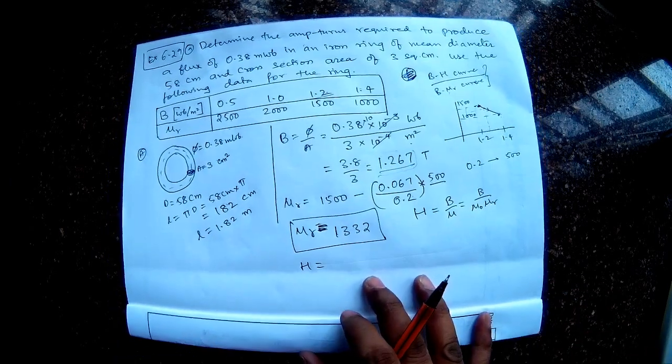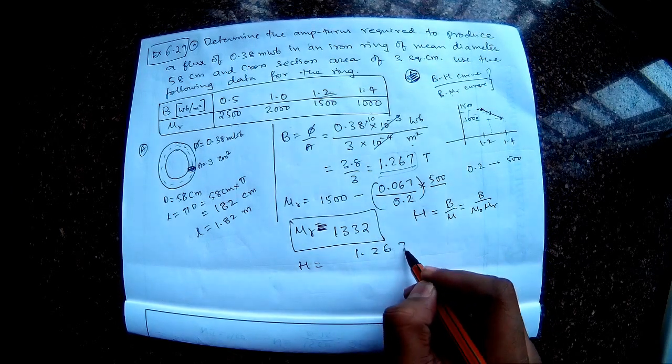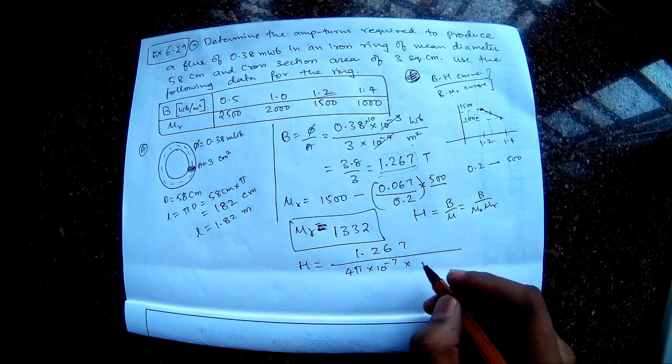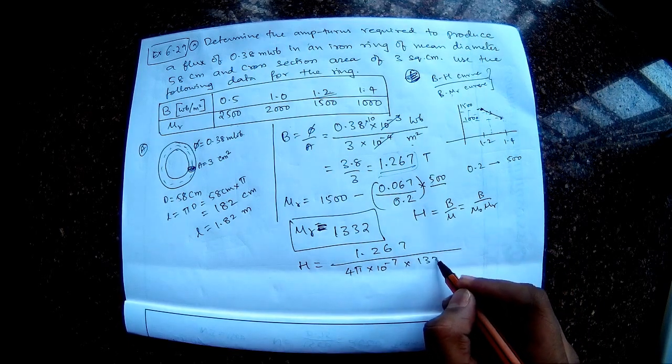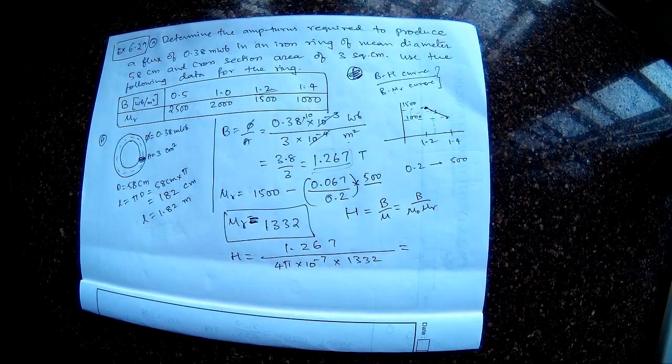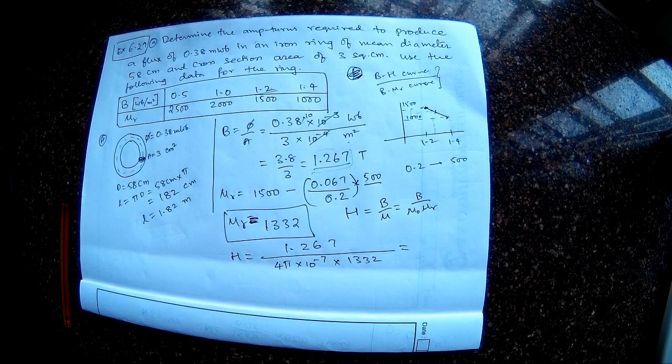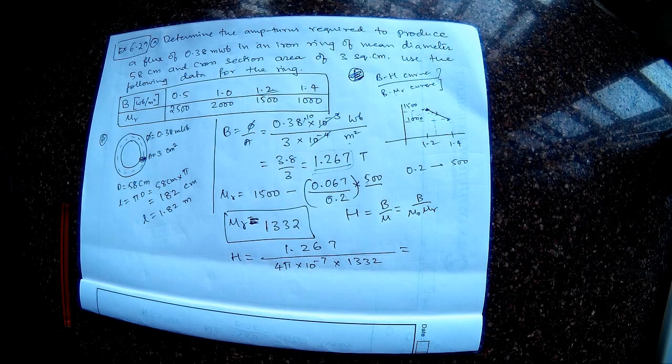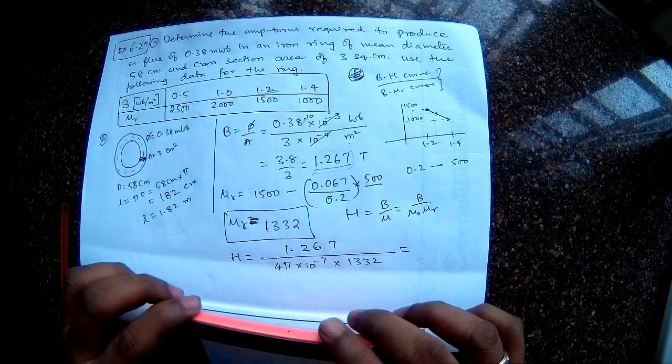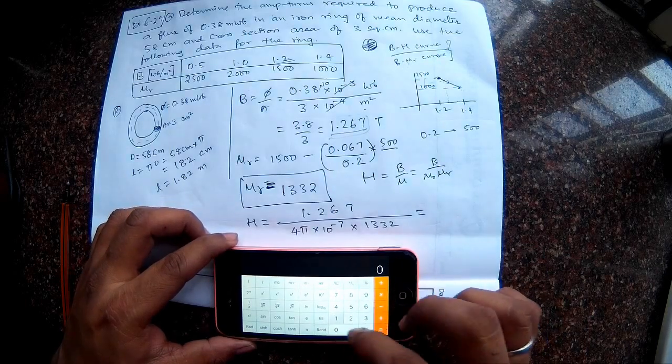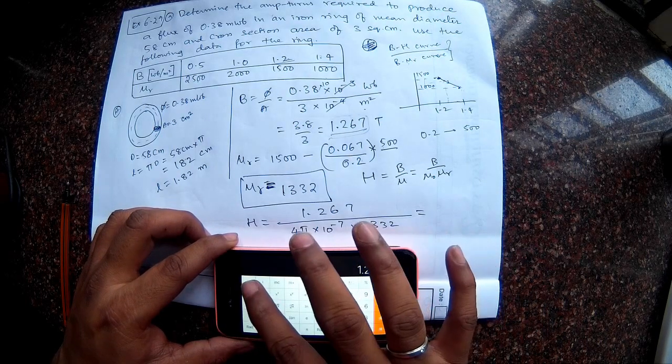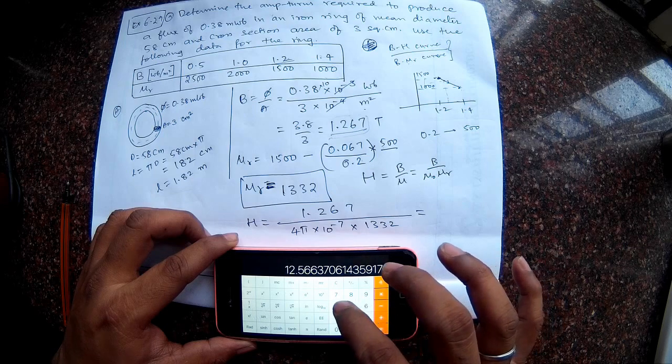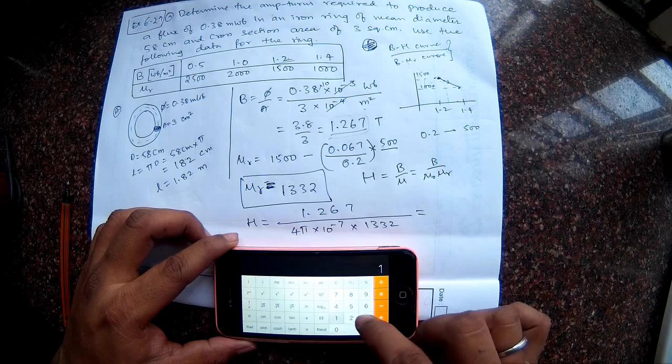So what is B? So B is flux density 1.267 tesla divided by mu naught, that is 4 pi into 10 power minus 7, and then mu R relative permeability, that is just now we estimated, that is 1332. So let us calculate what is the H from this. So I am just bringing my calculator up.